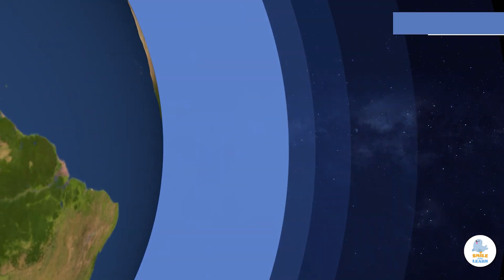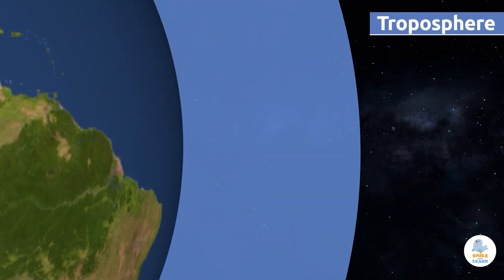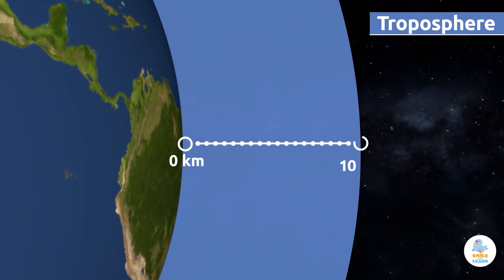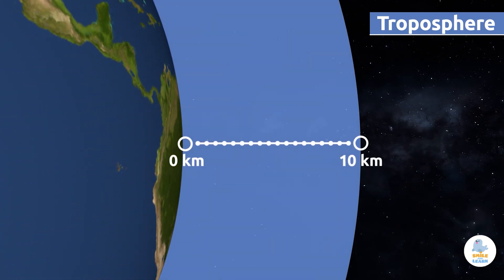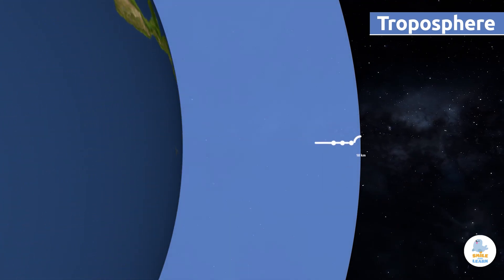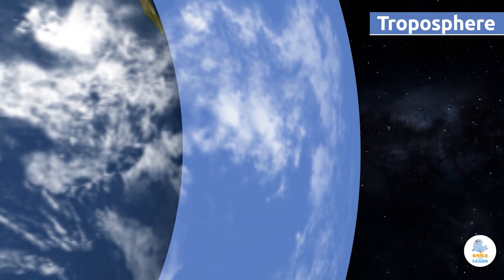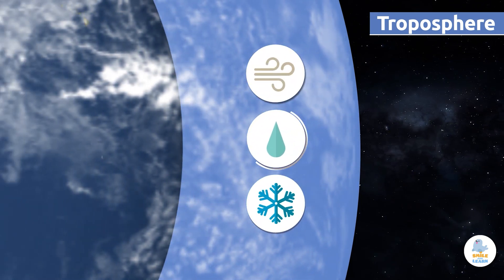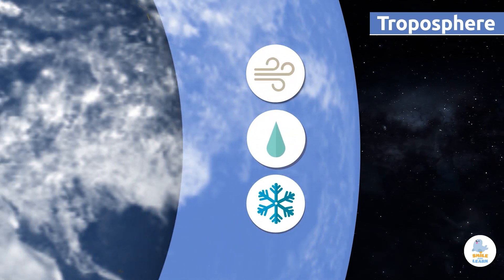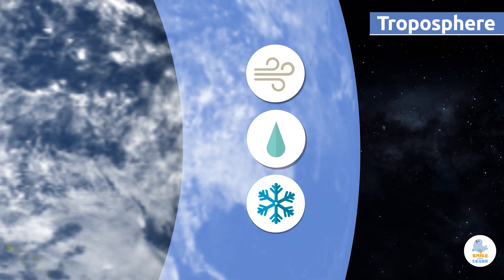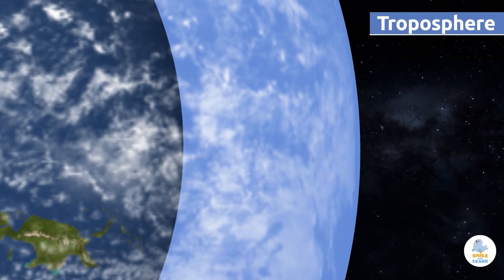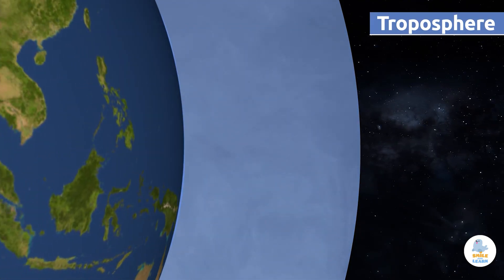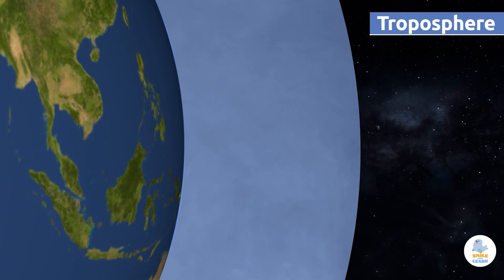The troposphere is the layer closest to the surface of the Earth. It measures approximately 10 kilometers high. Clouds are found in the troposphere, and weather phenomena like wind, rain, or snow occur here as well. Air, which is much needed for life on the planet, is found in the troposphere. That's why we should make sure not to contaminate it.